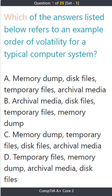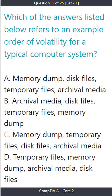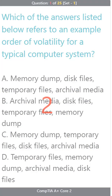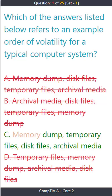Question 1: Which of the answers listed below refers to an example order of volatility for a typical computer system? A) memory dump, disk files, temporary files, archival media. B) archival media, disk files, temporary files, memory dump. C) memory dump, temporary files, disk files, archival media. D) temporary files, memory dump, archival media, disk files. The correct answer is C: memory dump, temporary files, disk files, archival media.